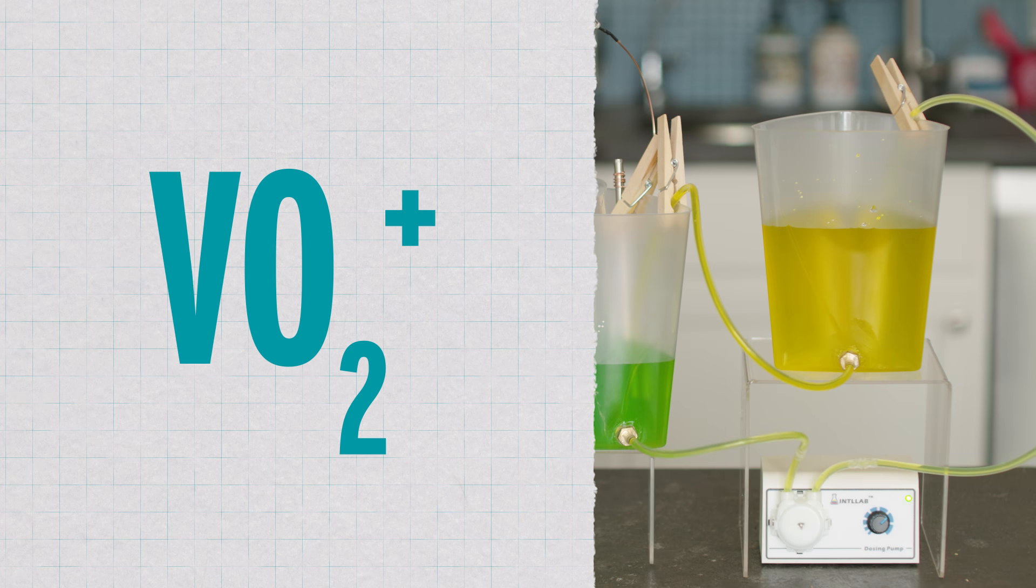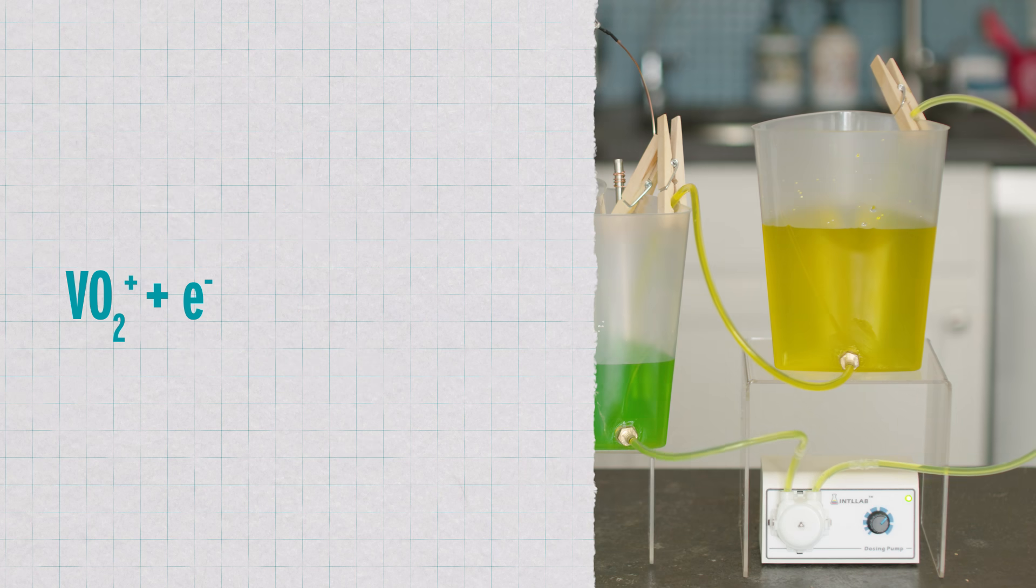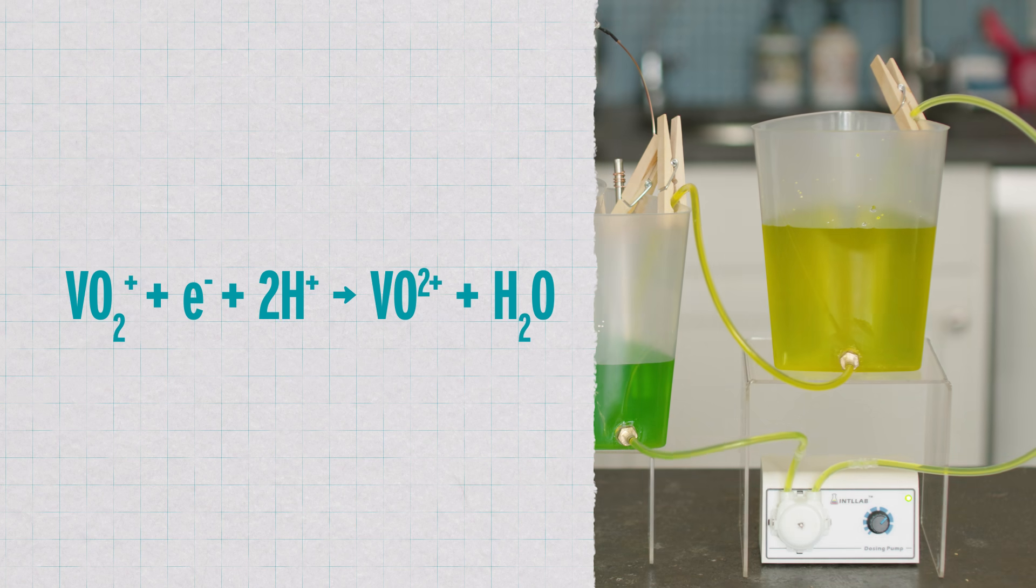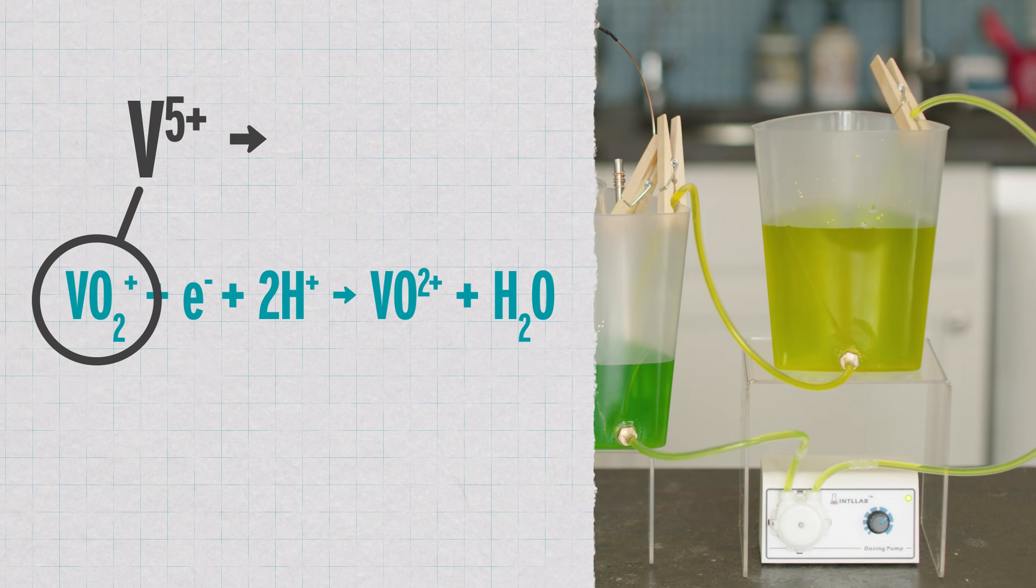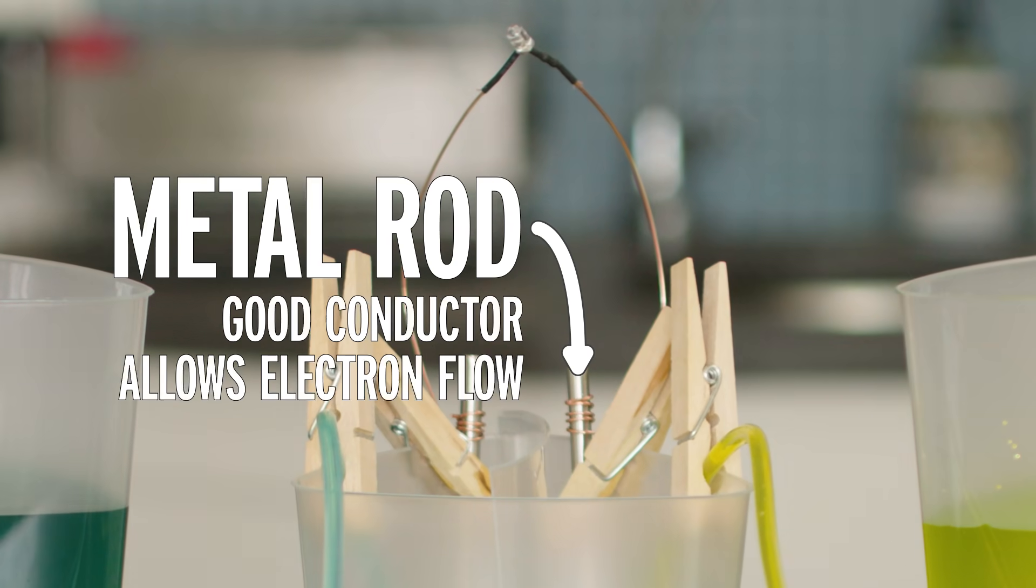In this chamber, the vanadium dioxide reacts with the electron that came over from the first chamber, as well as two protons from sulfuric acid, forming vanadium oxide, VO2+, as well as water. And when that happens, the vanadium's oxidation state changes from 5+ to 4+. This half reaction also happens at the surface of the metal rod.